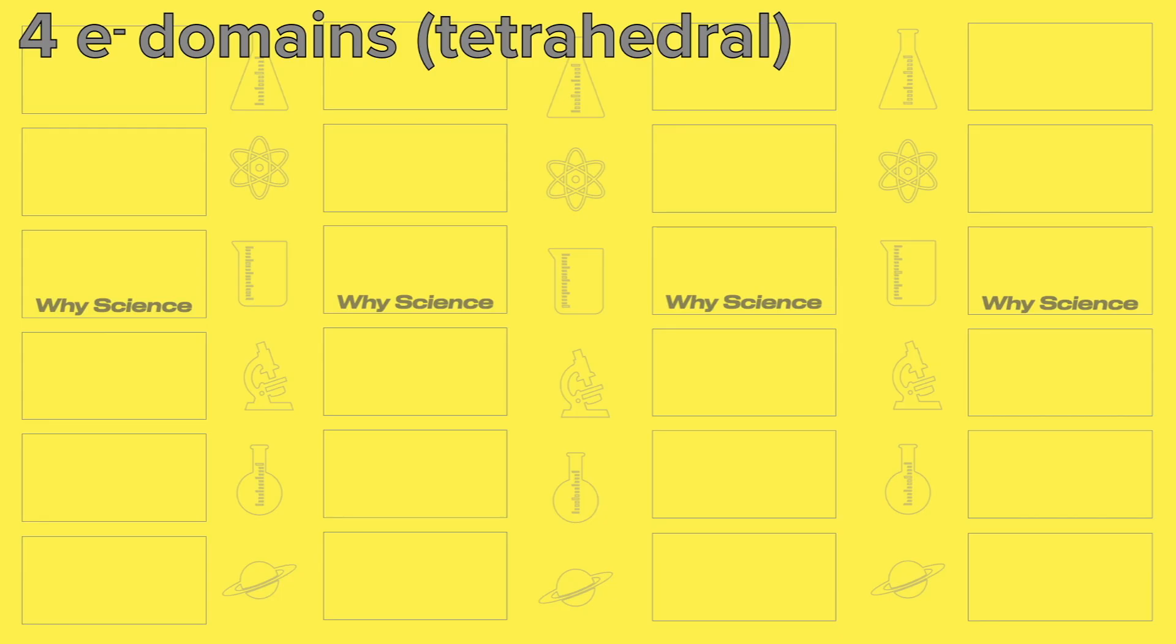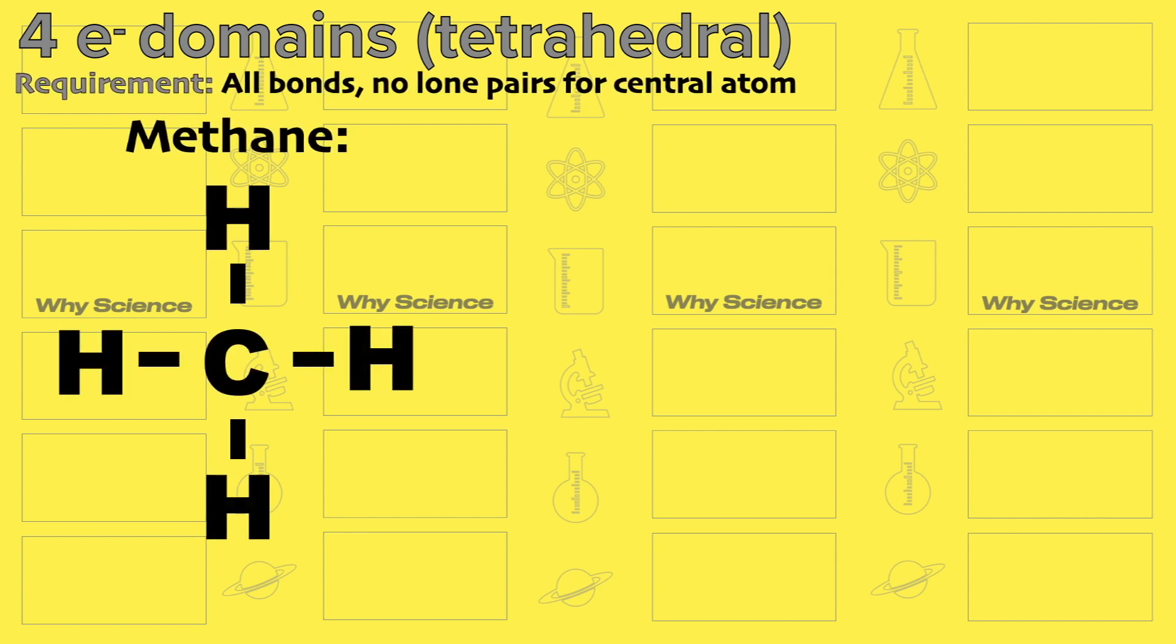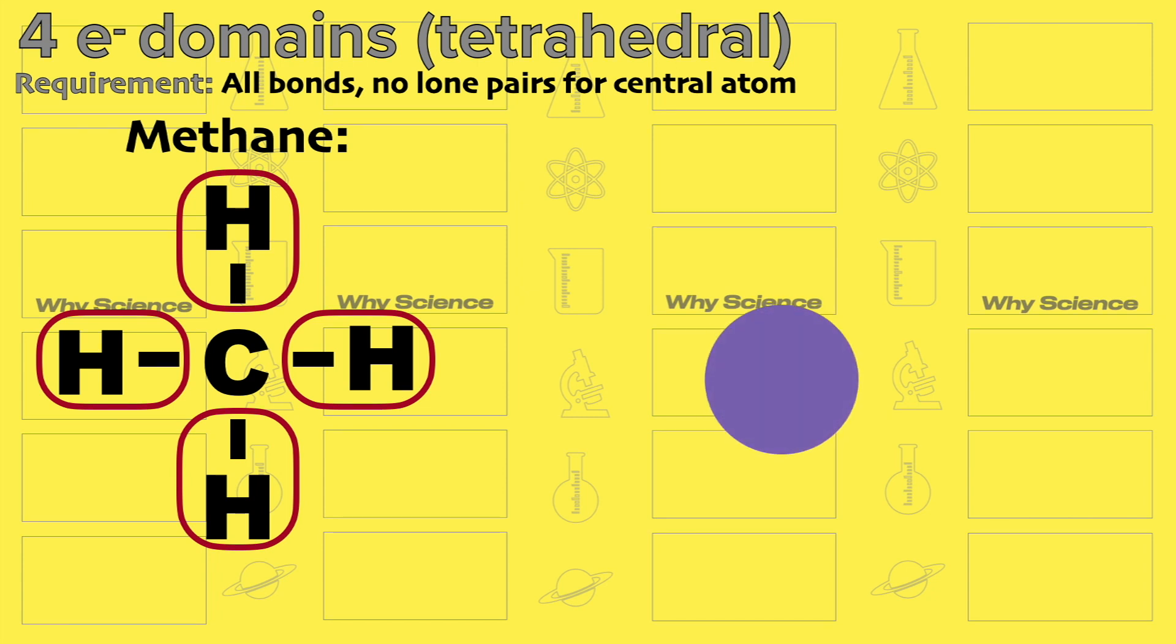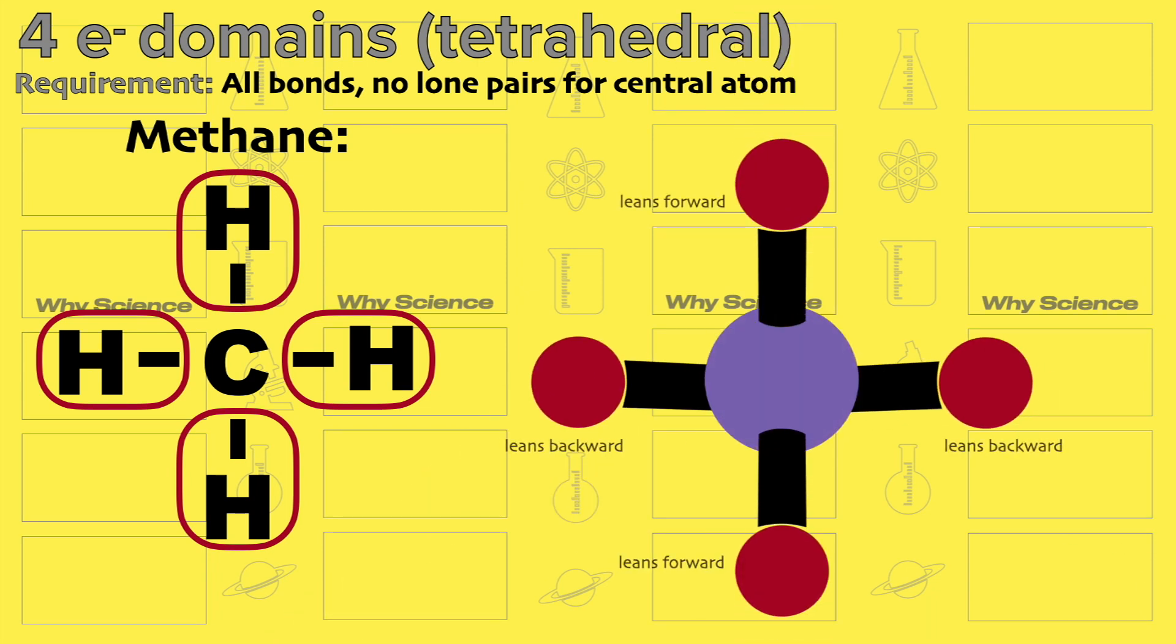It will happen if all four electron domains are bonds. Methane is a good example with this Lewis dot structure. Methane has no lone pairs but it has four bonds with hydrogen. Here is our central atom, carbon. We put the four hydrogen atoms in it, then they will all spread out. To further visualize this, the molecular geometry looks like this.